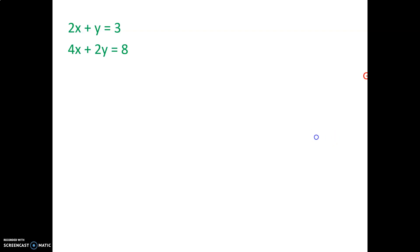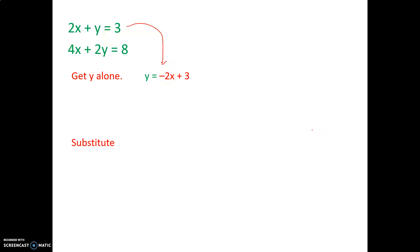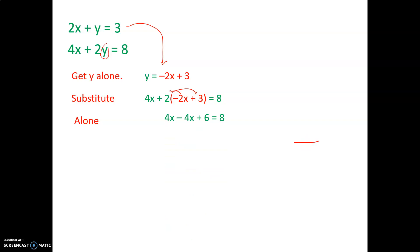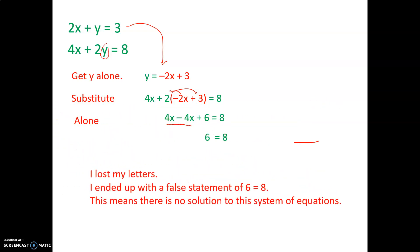Now here are the strange ones. Getting y alone in the first equation gives y equals negative 2x plus 3. Substituting into the other equation: 4x plus 2 times negative 2x plus 3 equals 8. Distributing gives 4x minus 4x plus 6 equals 8. The x terms drop out, leaving 6 equals 8 — a false statement. This means there is no solution to this system of equations.